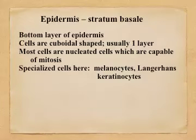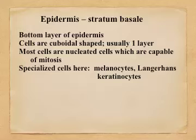The stratum basale is the bottom layer of the epidermis. A lot of people remember this by basale sounding kind of like basement. Here, instead of the squamous cells that we saw in the stratum corneum, we have cuboidal or cube-shaped cells. Usually these are just one layer thick, sometimes they can be more than one layer. Most of the cells in this layer have nuclei — they're nucleated, and therefore they have DNA and they can divide.